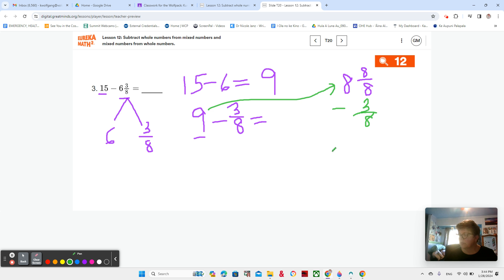8 and 8 eighths is equal to 9. And then I'm going to take away my 3 eighths, right? This would be similar to drawing the pictures and breaking the last one into eighths. 8 eighths minus 3 eighths is 5 eighths. So that would give me 8 and 5 eighths, yeah?